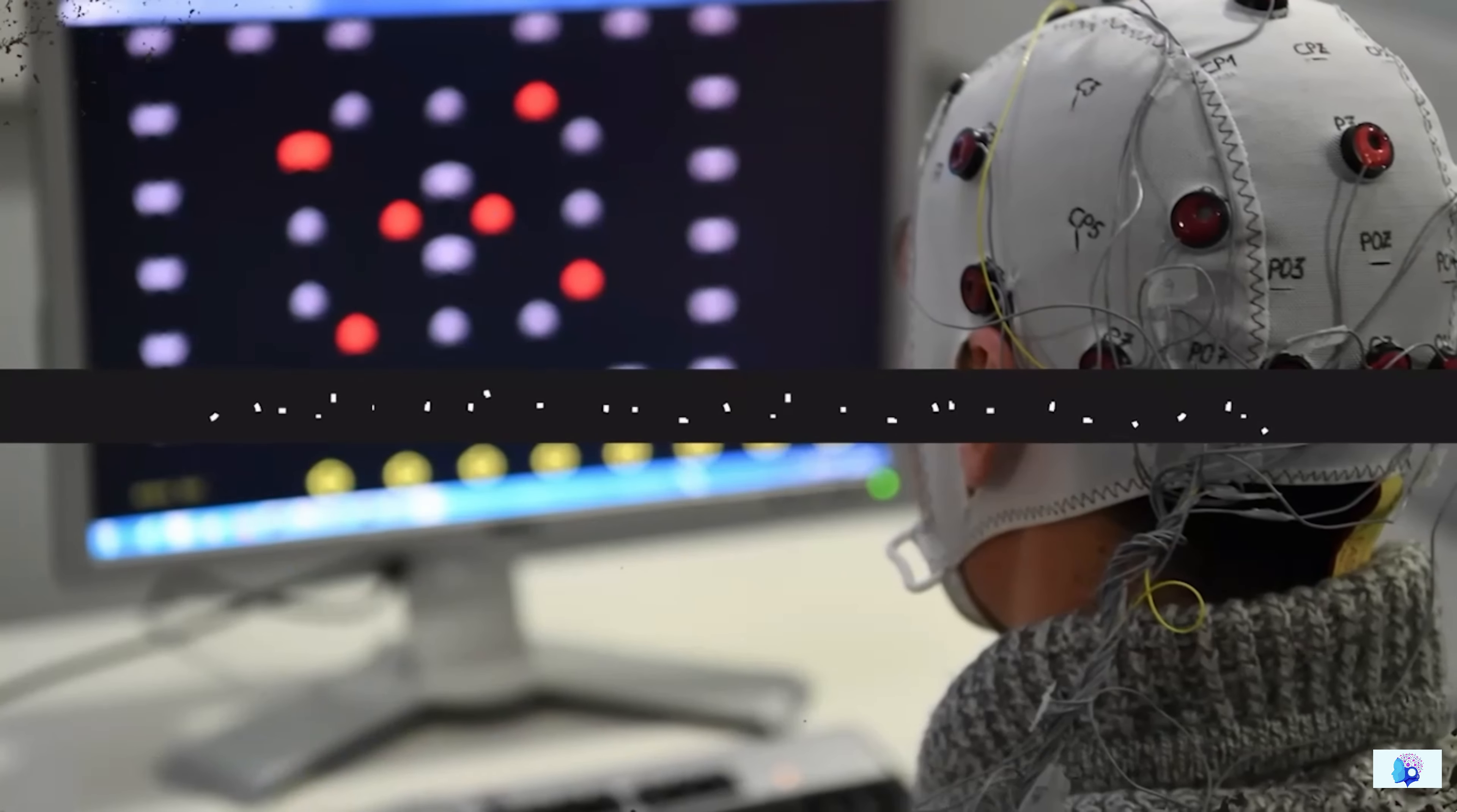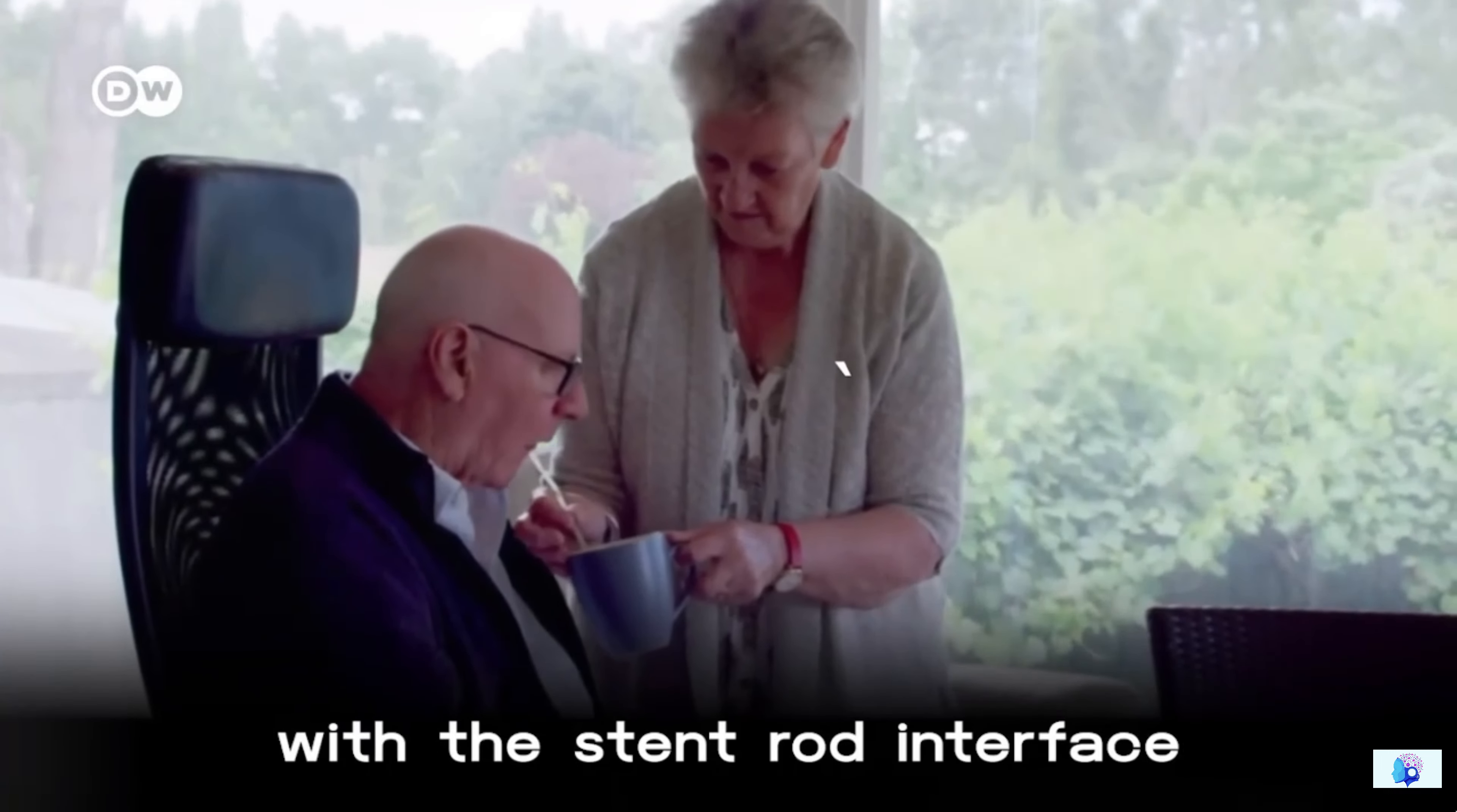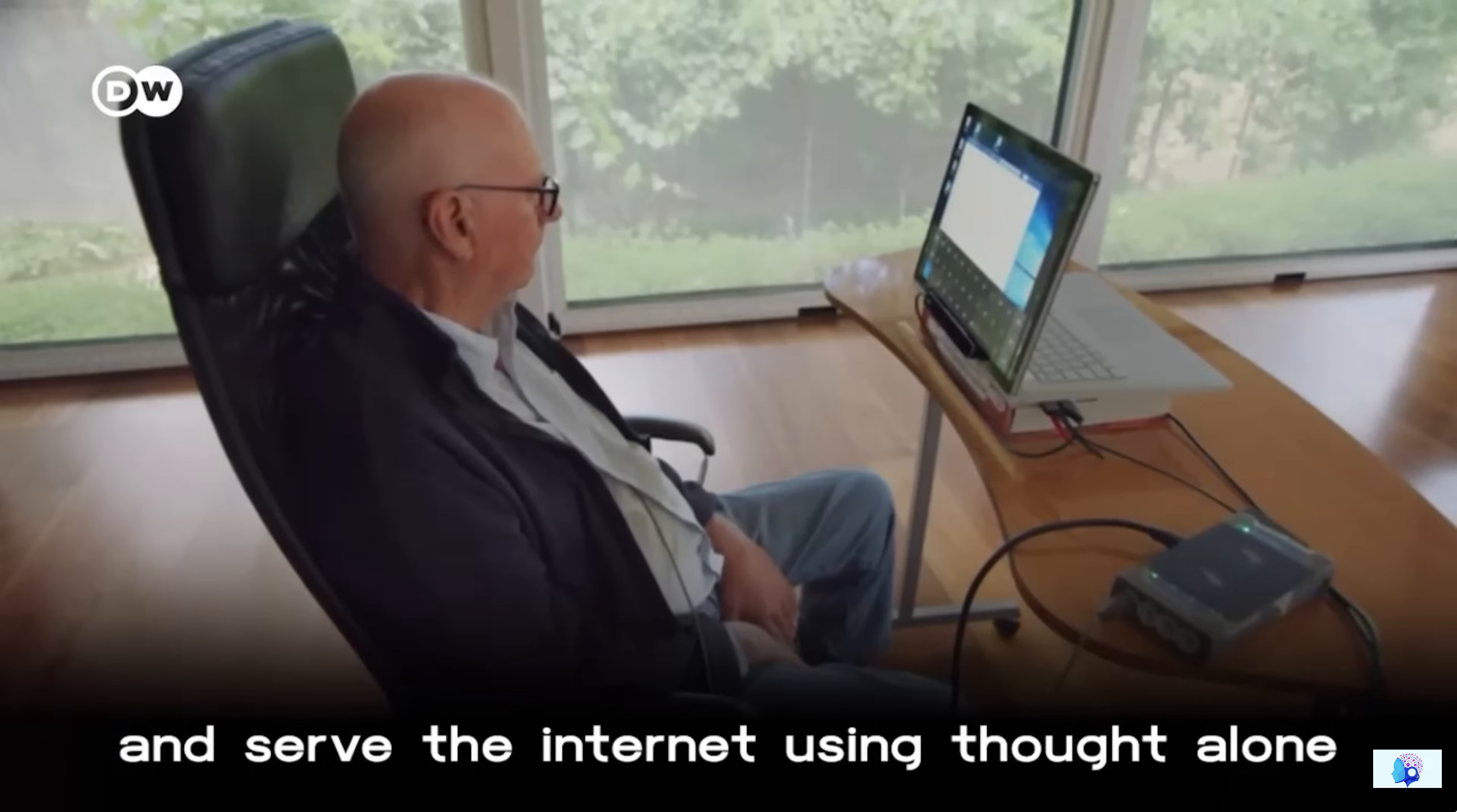This revolutionary technology is called Brain-Computer Interface, BCI, and it will become a reality in the next two, three years. The first person to be implanted with a stent rod interface is the Australian Graham Felstead. His brain signals are transmitted to a sensor in the chest where a receiver forwards them to a computer. This enables Graham Felstead to chat and surf the internet using thought alone.